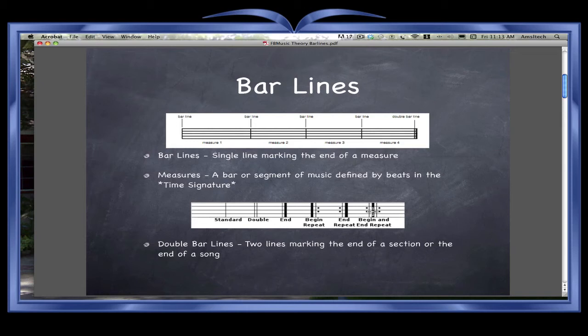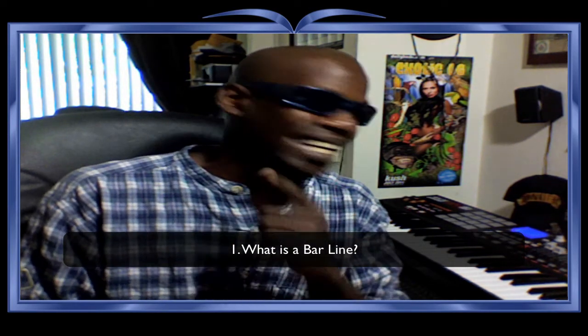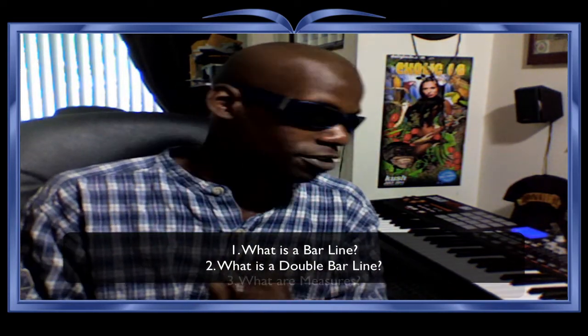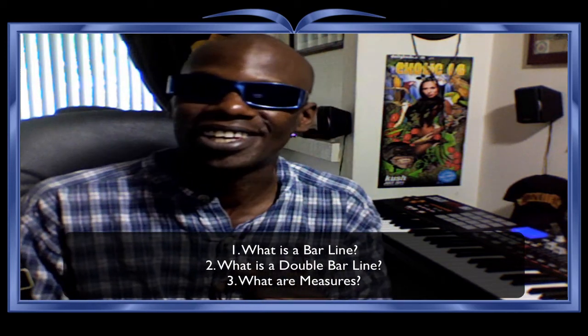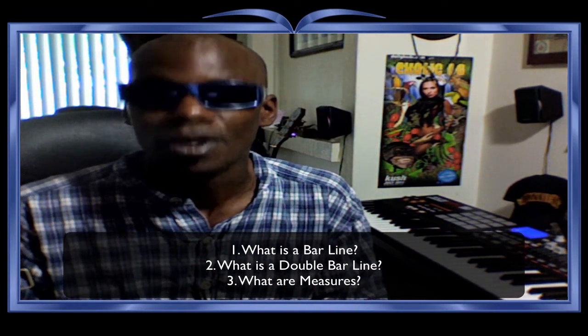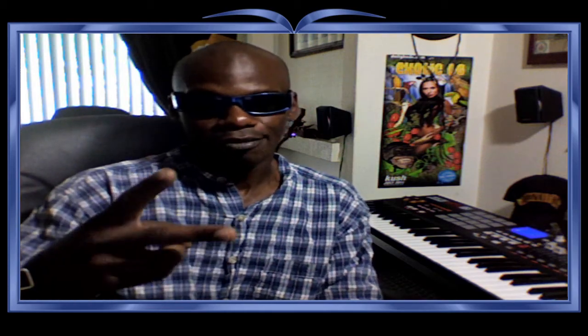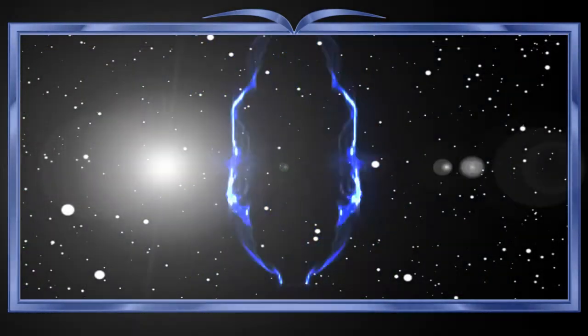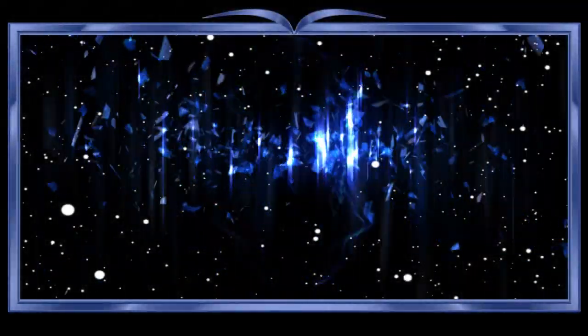Don't worry about repeats just yet — just know bar lines. What I want you to ask yourself before the next lesson: What is a bar line? What is a double bar line? What are measures? You should know that by now. Look forward to the next lesson, which is going to be repeats and ledger lines. But for now, that's it with bar lines. This is Doc Real, signing off. Doc Real TV — we'll be right back.